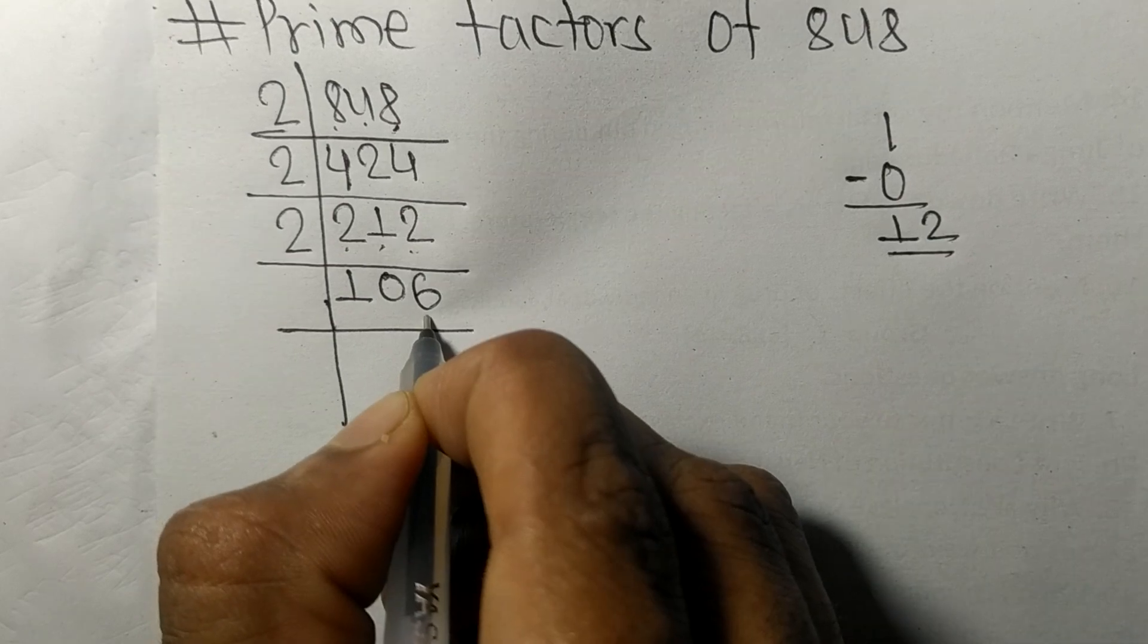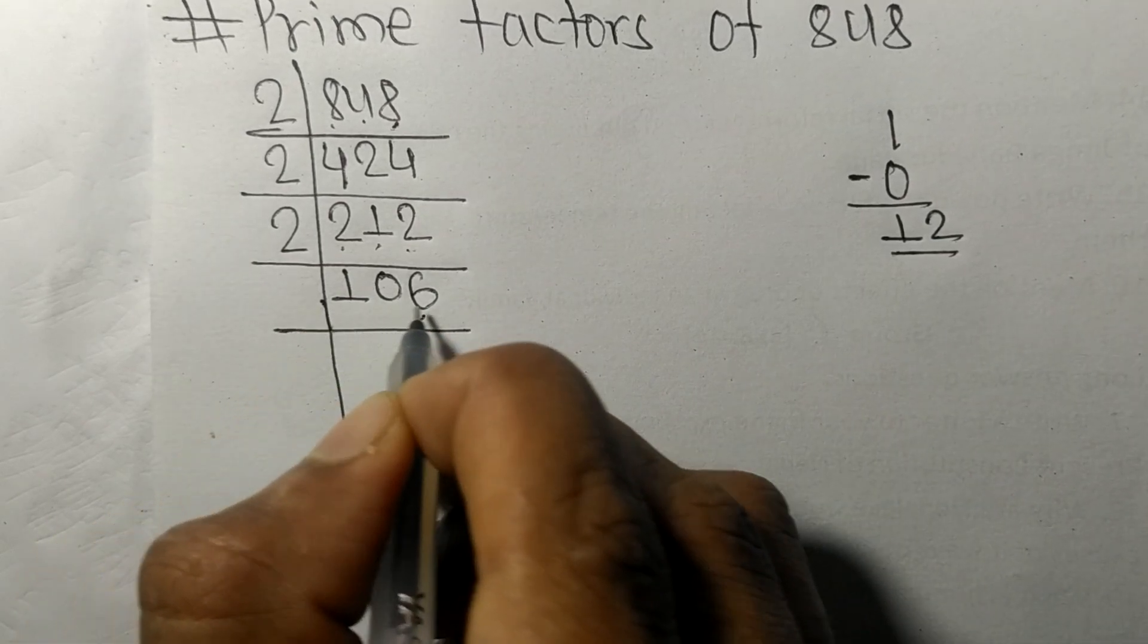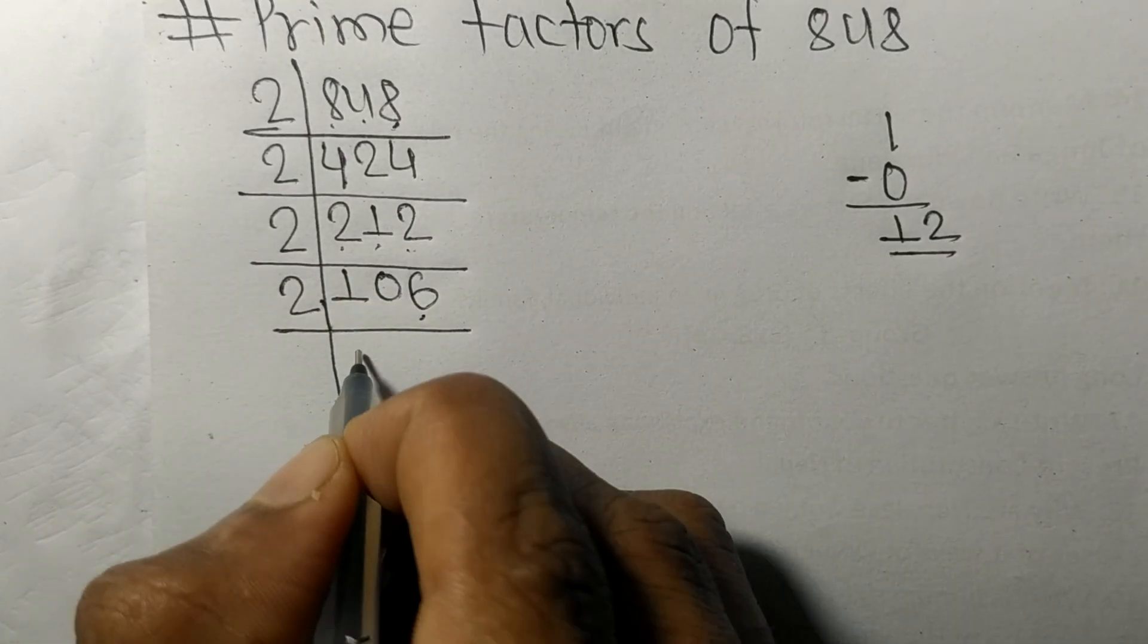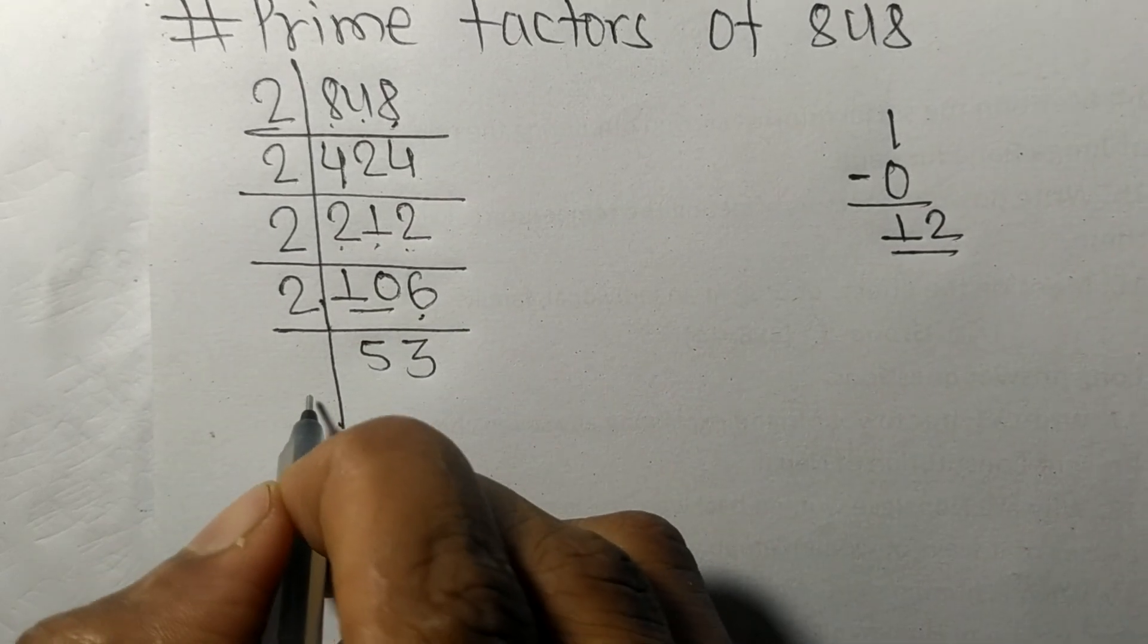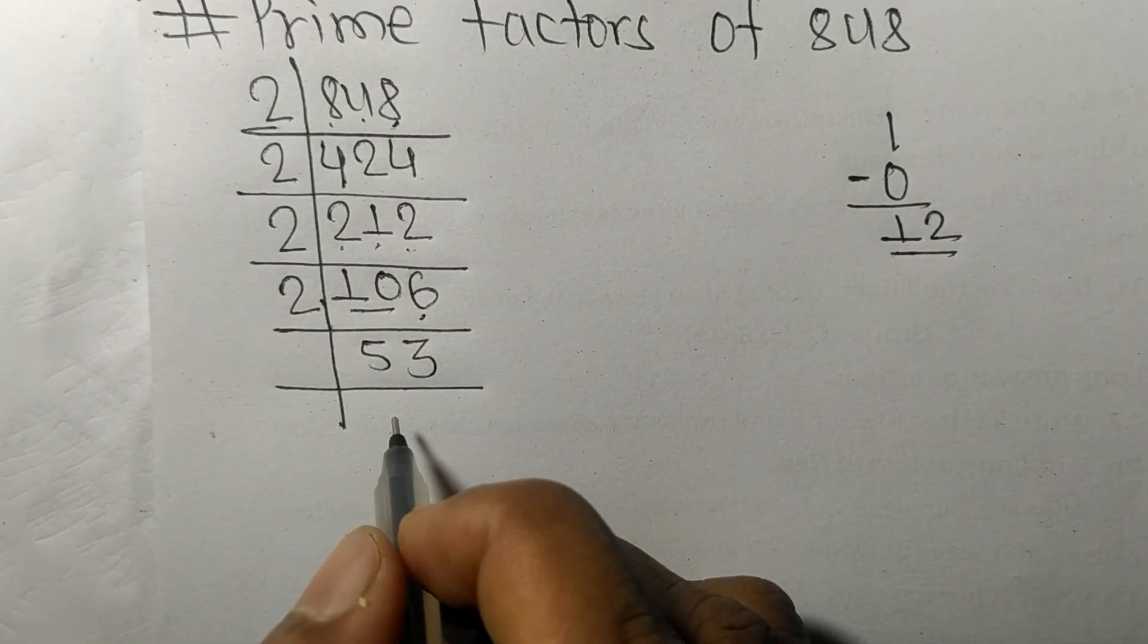We have even number 6 at last, so it is divisible by 2. 2 times 5 is 10, 2 times 3 is 6. So now we got 53.